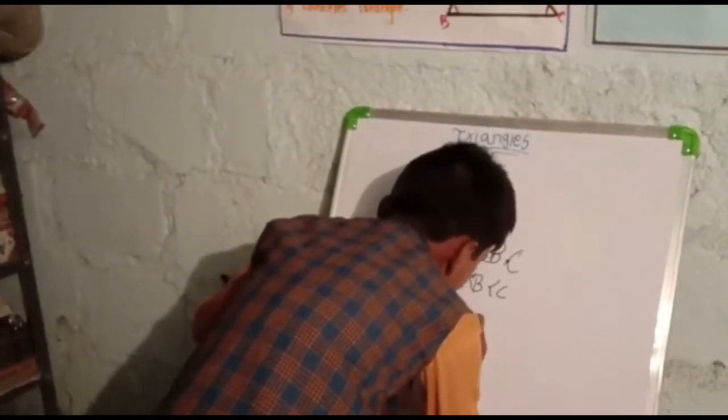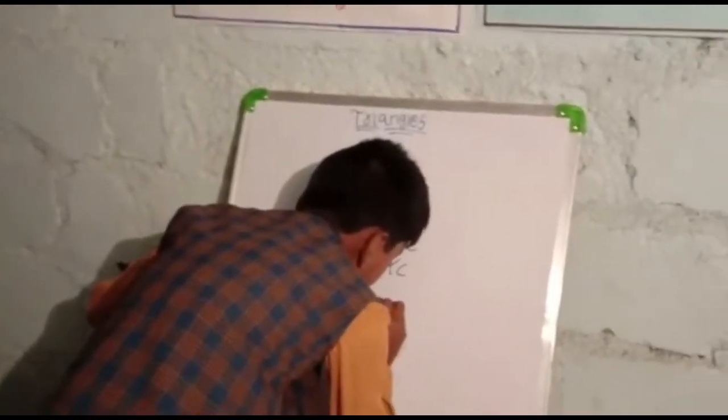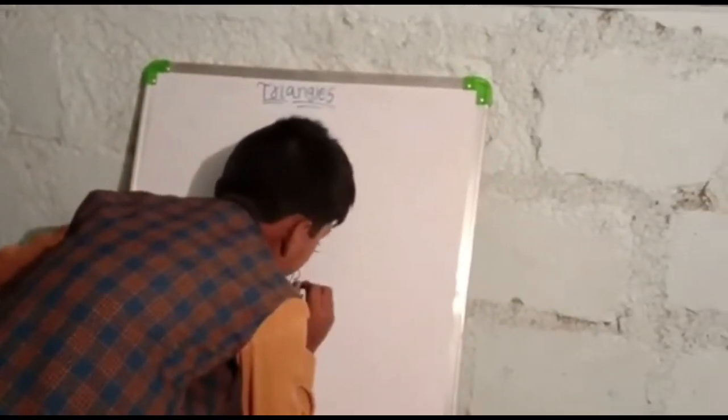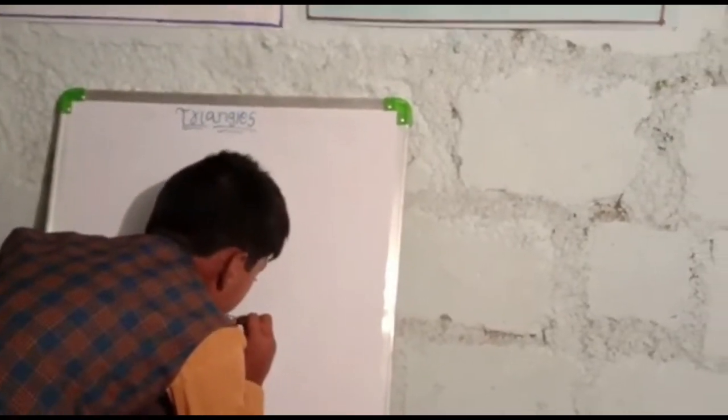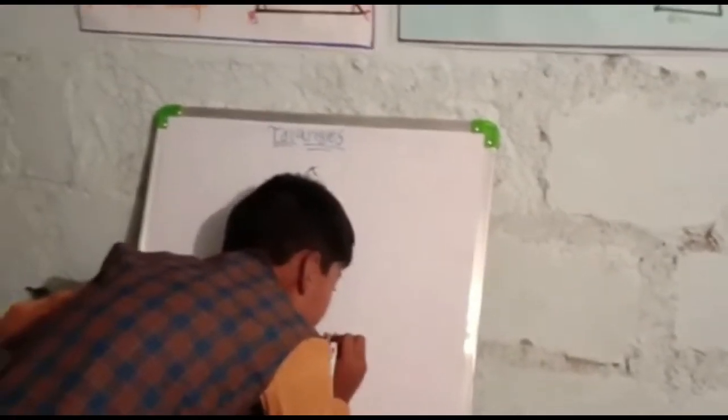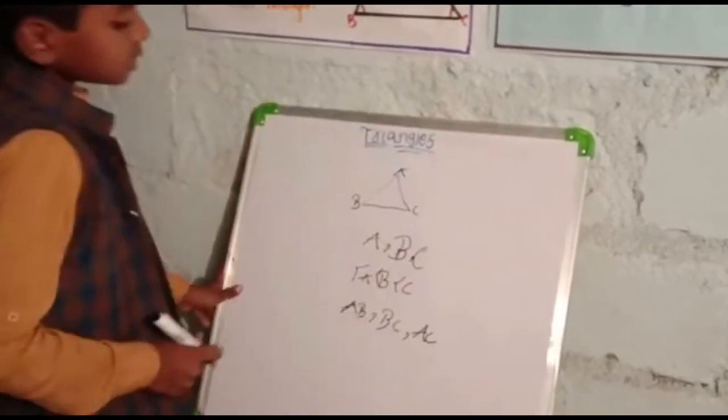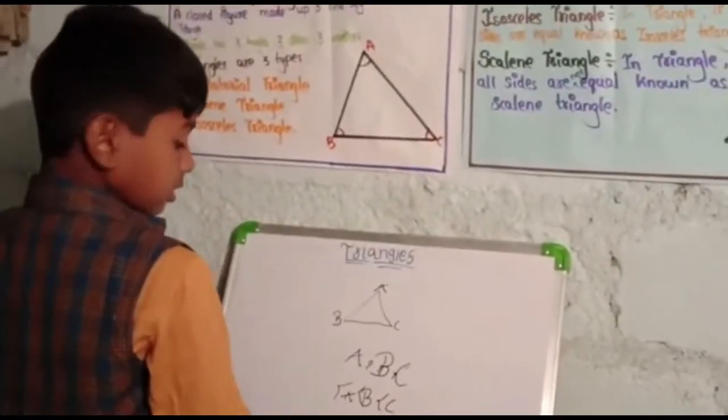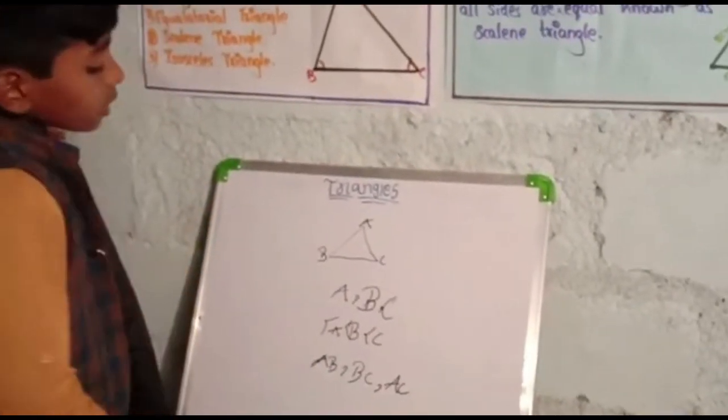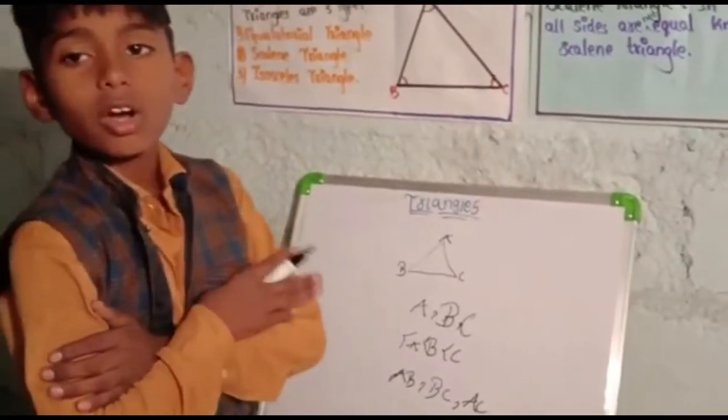The sides are AB, BC, CA. These are the sides, all sides of the triangle.